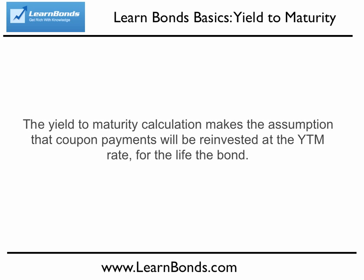To overcome this dilemma, the yield to maturity calculation makes the assumption that coupon payments will be reinvested at the yield to maturity rate for the life of the bond. While this means that the yield to maturity calculation is not 100% perfect, it still gives the best estimate of the return you should expect over the life of a bond. It also gives the best standardized measurement to look at when comparing one bond versus another.